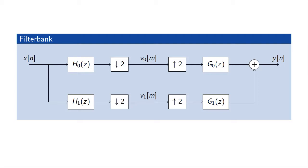Consider a filter bank with an input signal X of n and output signal Y of n. At the middle of the filter bank we have V0 of m and V1 of m, where V0 of m represents a low-pass component and V1 of m corresponds to a high-pass component of X of n. Both the low-pass and high-pass branches could be implemented using polyphase implementations, since we have a filter followed by downsampling for decimation, and an upsampler followed by a filter for interpolation. By splitting these using polyphase decomposition and interchanging the order of upsampling and filtering, we could save computations.